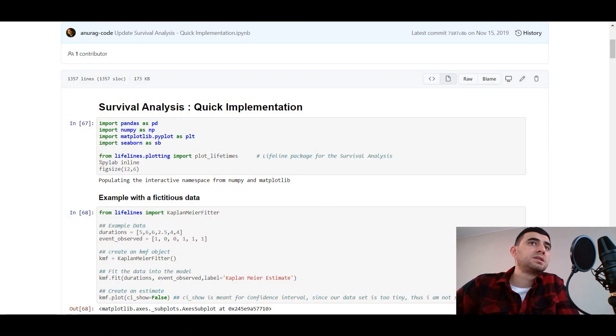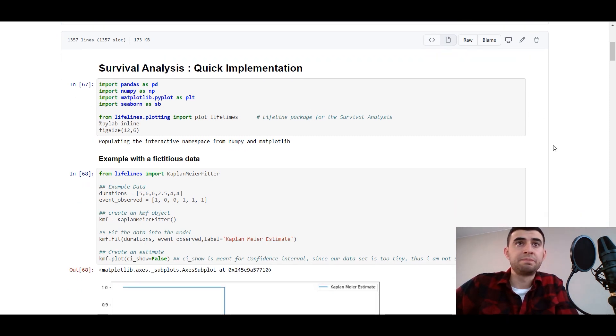As we know the theory, let's investigate the lifelines library in Python. I found this awesome implementation of survival analysis at Anura Code at the GitHub. So let's go ahead and see how we can implement it in Python.